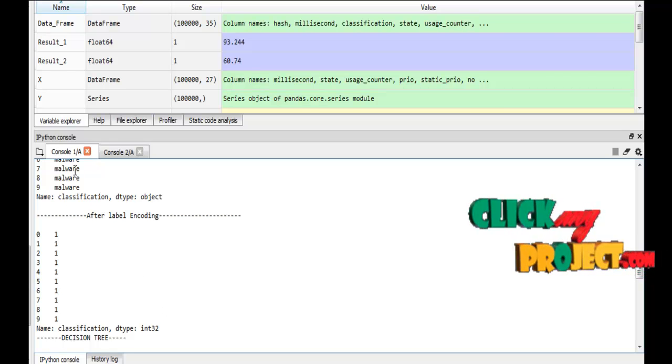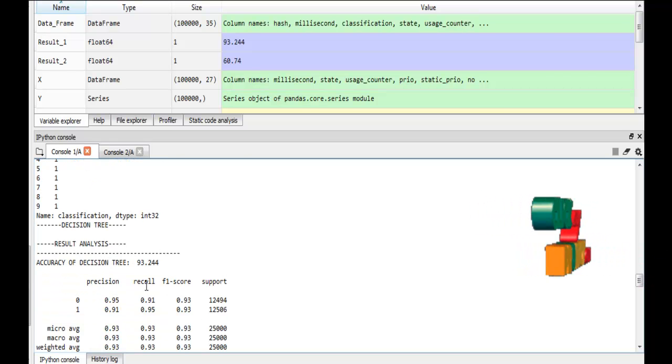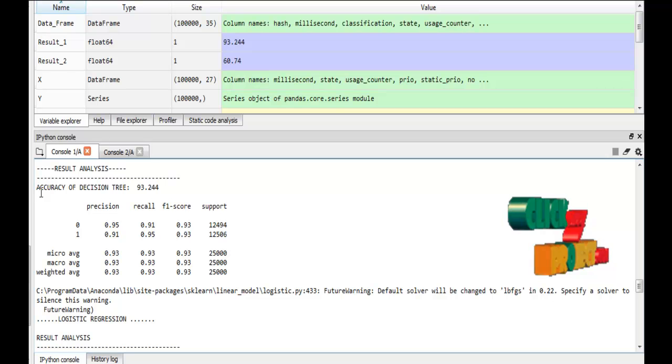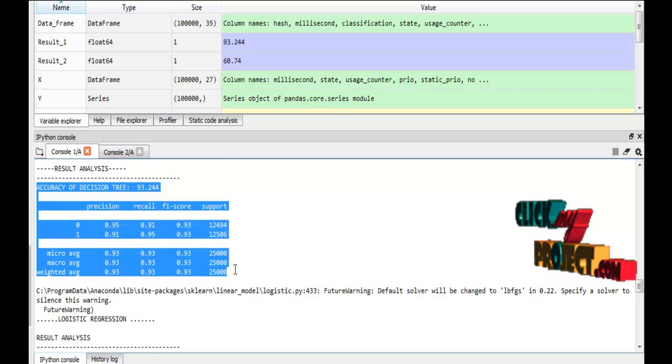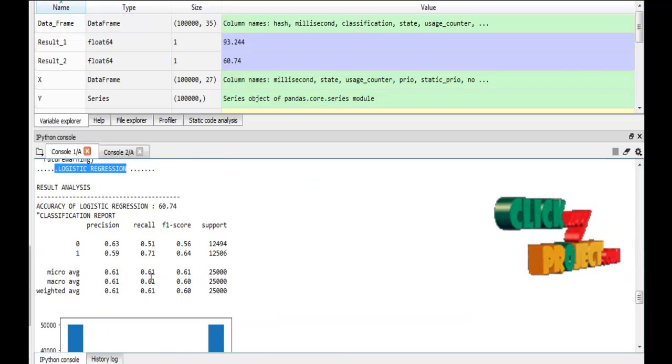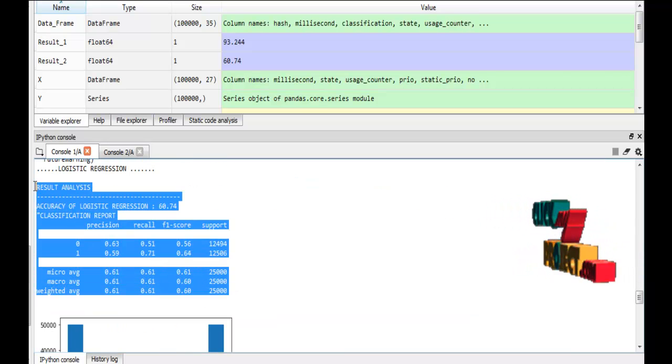After that, we have to use classification algorithms. One is decision tree. Here, the result will be displayed for decision tree. Then, logistic regression. This is the result of logistic regression.